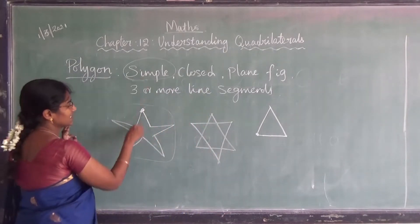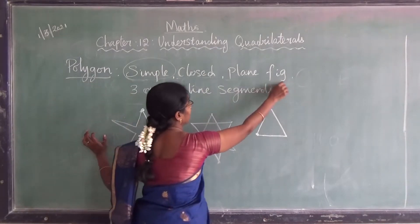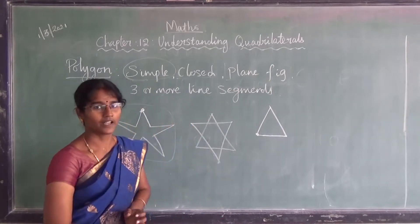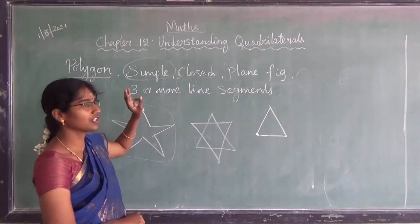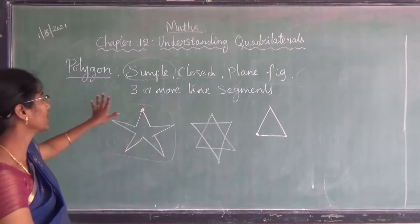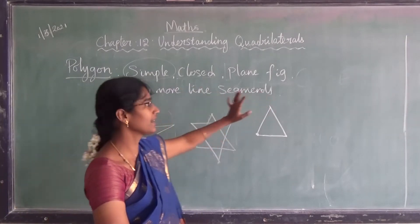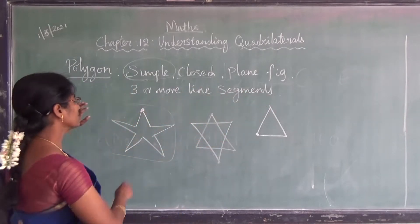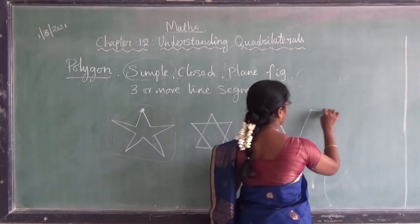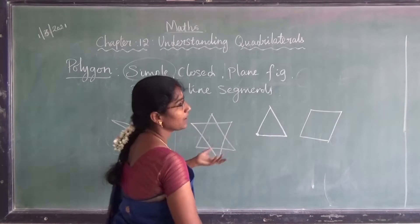So polygon means it must be simple and it must be closed, and then a plane figure. Plane figure means it is a two-dimensional figure. We don't say cube or cuboid — those are 3D figures and are not polygons. Polygon means only 2D figures. So the star, triangle, quadrilateral, square, rectangle, parallelogram — these are all plane figures.